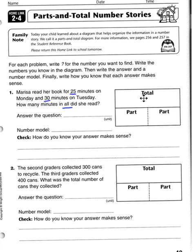That in all tells us that we are looking for the total amount she read. The parts are the two numbers they gave us, 25 and 30.